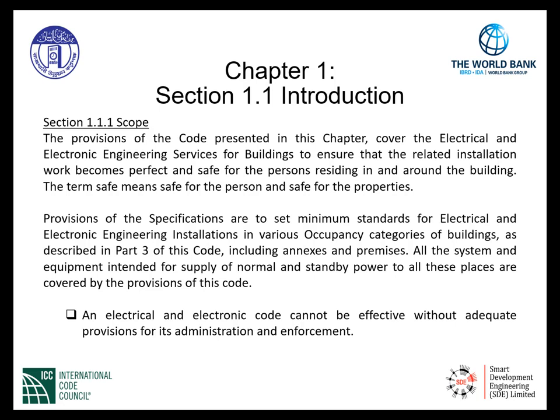An electrical and electronic code cannot be effective without adequate provisions for its administration and enforcement. The scope requirement is for the safe design and installation to keep people safe in our buildings from the hazards of electrical and electronic installations. There is plenty of information and requirements to guide the designer, the installer, and the code official with key requirements to have these safe systems built for the end user.